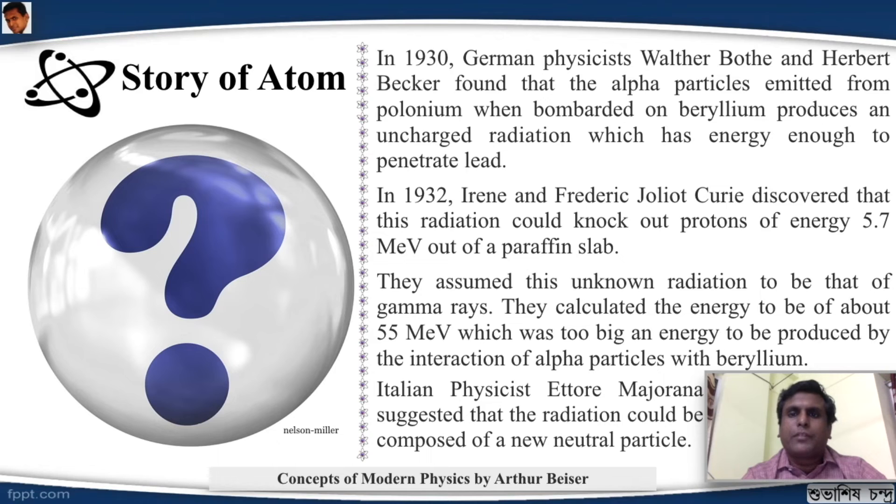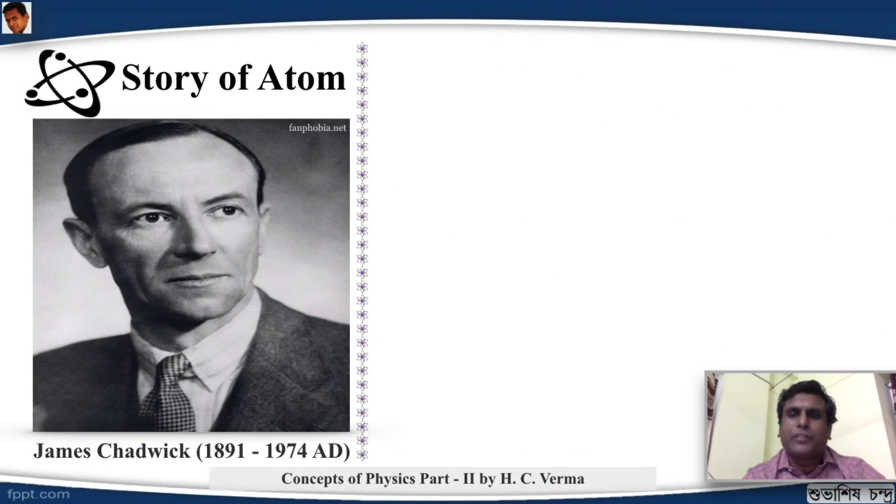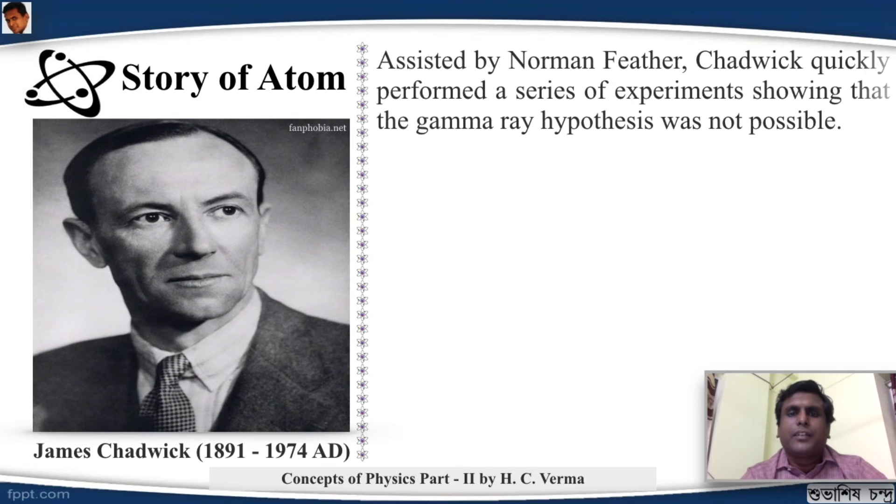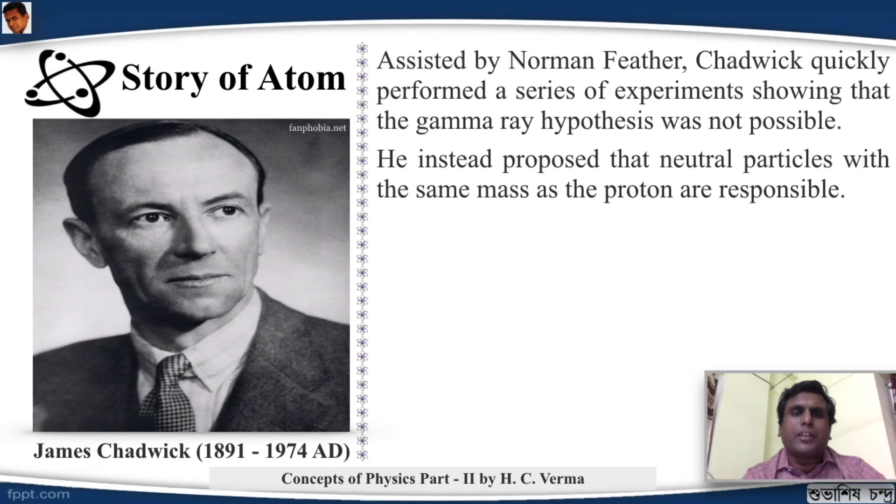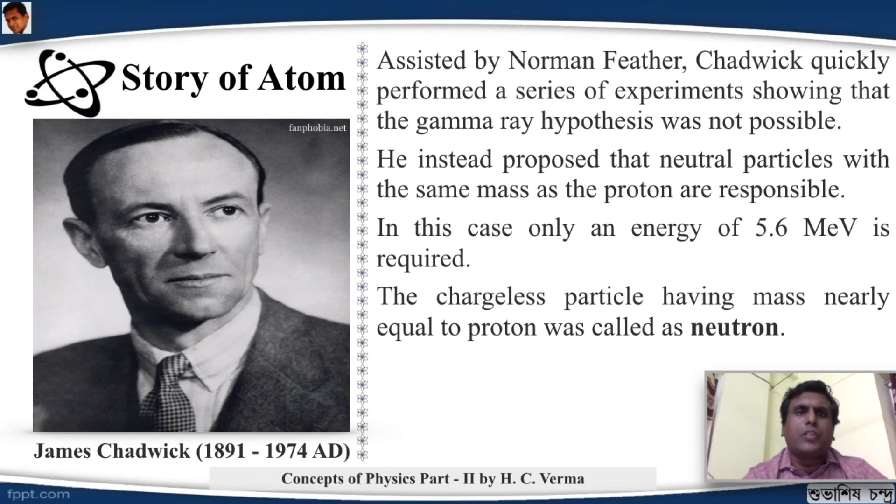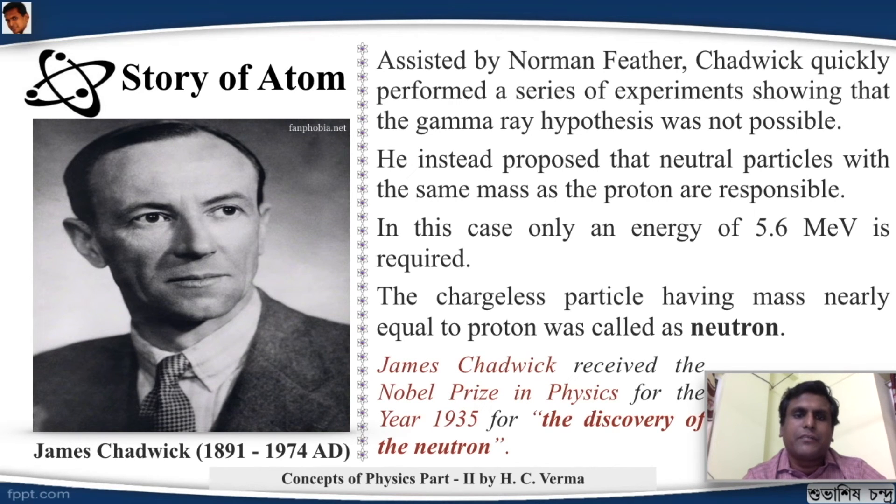One fellow who jumped into it was this gentleman from England, James Chadwick. Assisted by Norman Feather, Chadwick quickly performed a series of experiments showing that the gamma ray hypothesis was not possible. He instead proposed that neutral particles with the same mass as the proton are responsible. In this case, an energy of 5.6 MeV is required, which is possible. The chargeless particle having mass nearly equal to the proton was called as neutron.